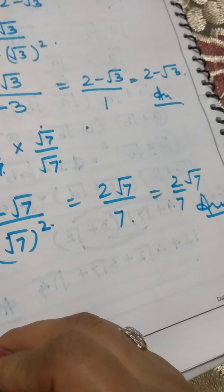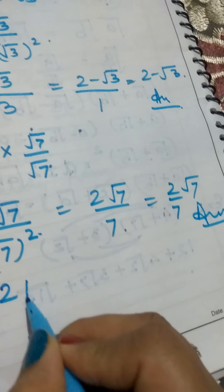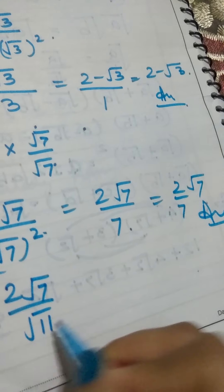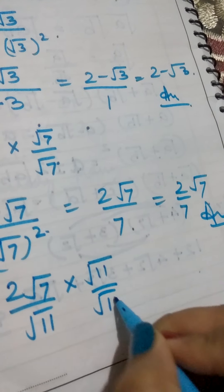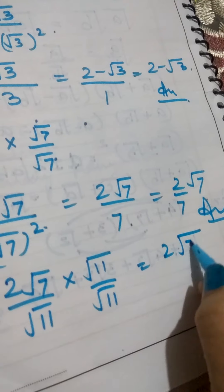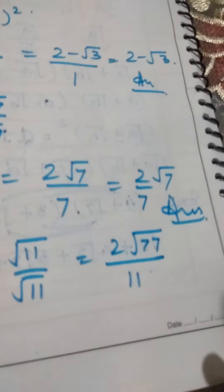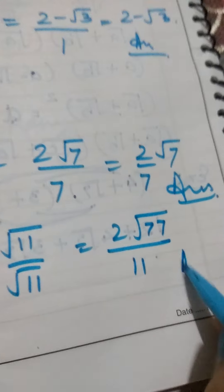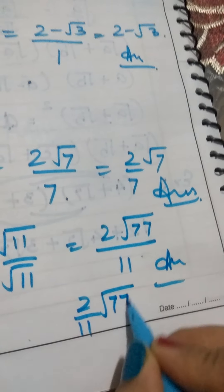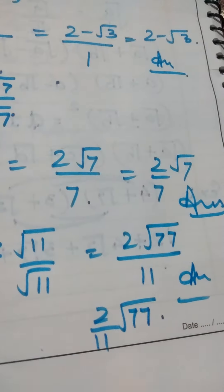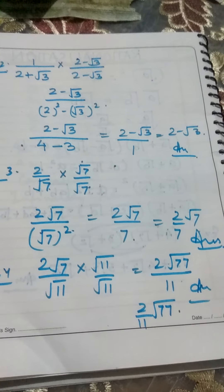Similarly, if we have 2√7/√11, we rationalize the denominator by multiplying by √11/√11. This becomes 2√77/11, which is the answer. We can write it as 2/11 for the rational part with the irrational parts separately. This is how we do rationalization. Thank you.